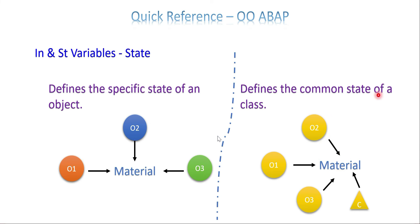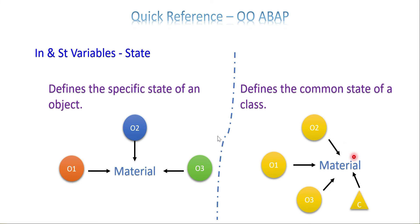If you come to the static attribute, everything is in one place — a common state. Whether you access it by different objects, the class is going to give the same value for each access. So O1 assigns a value of 1, and O2 and O3 access this static attribute — you will receive the same value, because this is a static attribute with a common state. This is the base rule of instance attribute and static attribute.